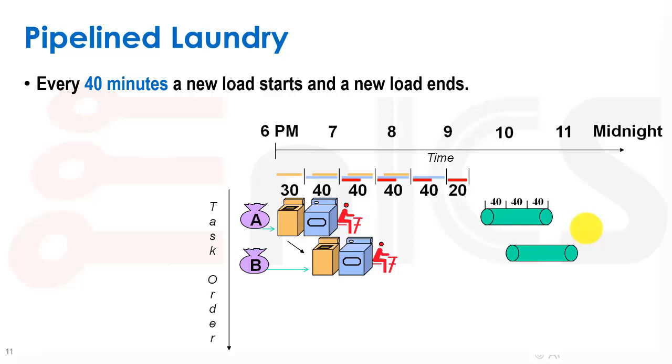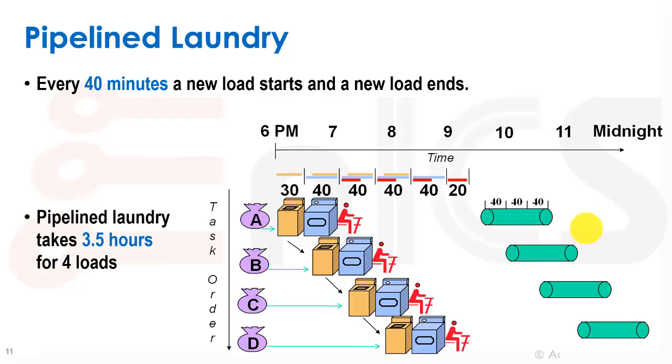And we can continue like this and reuse our loads in this type of a way. And in the end, we actually get an answer every 40 minutes, which is the slowest of all the operations, the operation of the dryer. So we can get a new load finishing every 40 minutes due to pipelining like this.